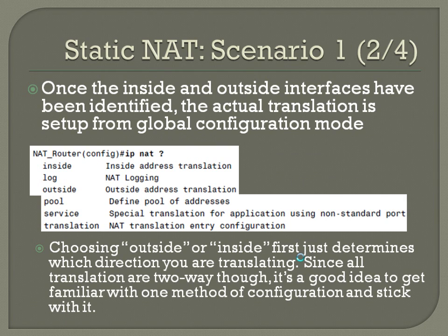Once the inside and outside interfaces have been identified, the actual translation is set up from global configuration mode. Jump back to global config. IP NAT inside — since all translations are two-way, it is a good idea to get familiar with one method of configuration and stick with it. I always start with IP NAT inside because that makes it less confusing to keep it the same each time.